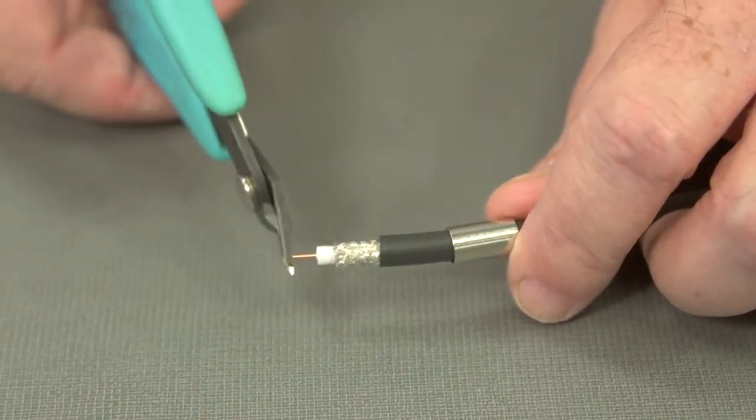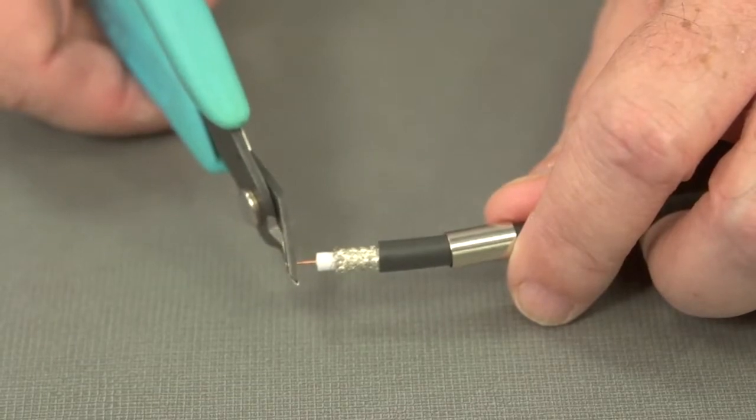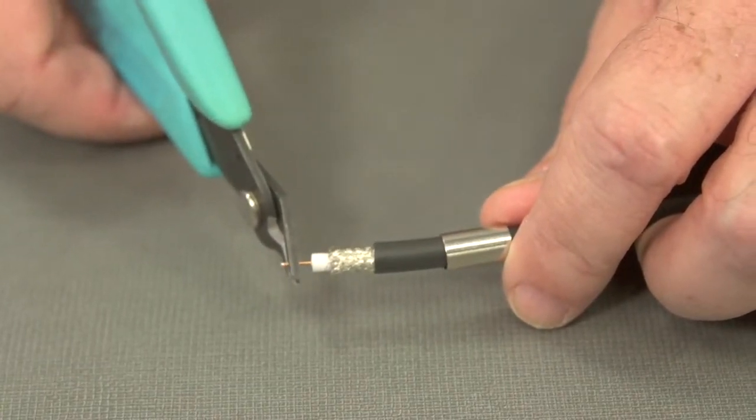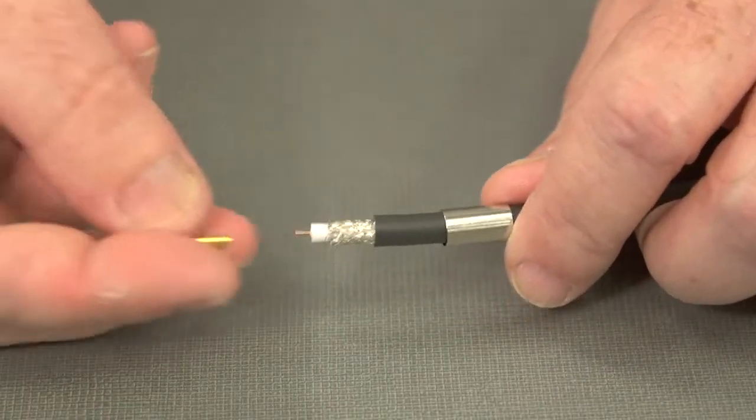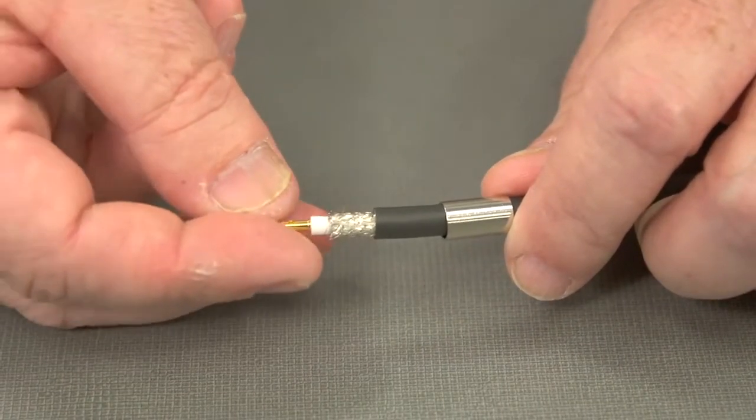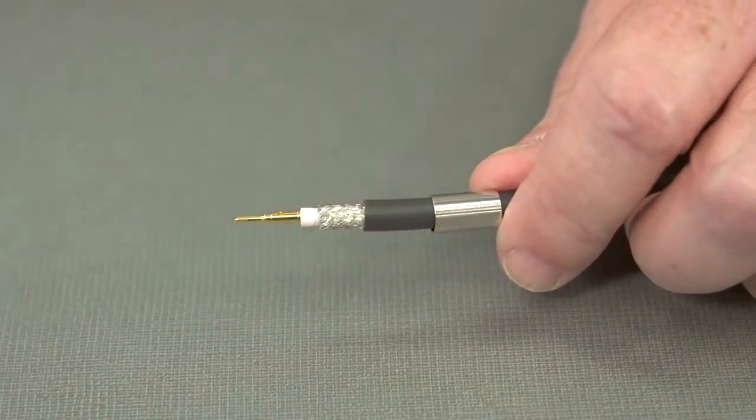We'll trim a little piece off here. We can see it in our inspection hole.